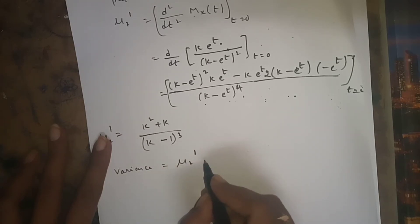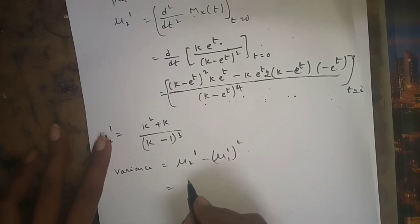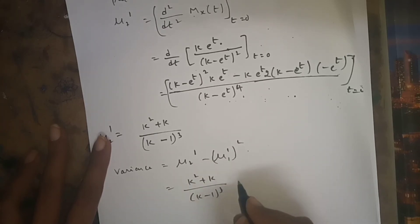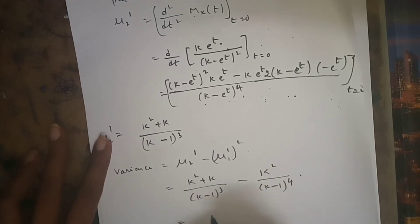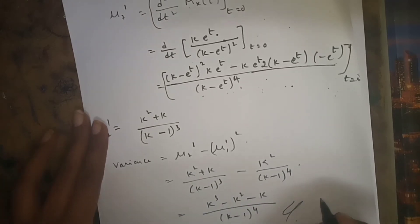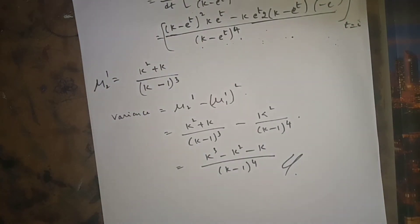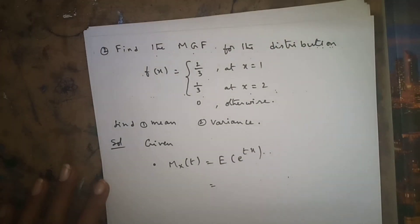Now, variance = mu_2' - (mu_1')^2 = (k^2 + k)/(k-1)^3 - k^2/(k-1)^4. Simplifying this expression, we get variance = (k^3 - k^2 - k) / (k - 1)^4. This is the answer for the mean and variance of the first problem.